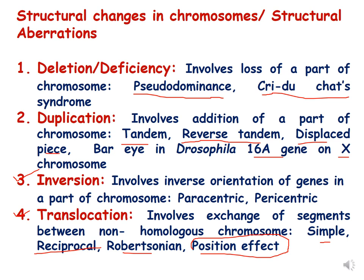Structural changes in chromosomes are also known as structural aberrations and these are of four kinds: deletion, duplication, inversion, and translocation. Deletion is also called deficiency and it involves a loss of part of a chromosome. This loss is also associated with pseudodominance. An example of deletion is Cri-du-chat syndrome.